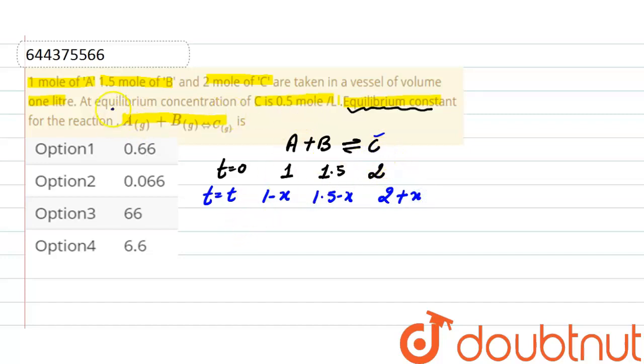Now at equilibrium, concentration of C is 0.5. That means concentration of C here at equilibrium, that is 2 plus x, is equals to 0.5. So 2 plus x equals 0.5. Here the value of x will be minus 1.5.